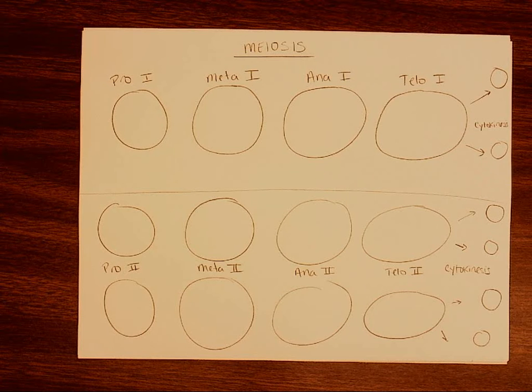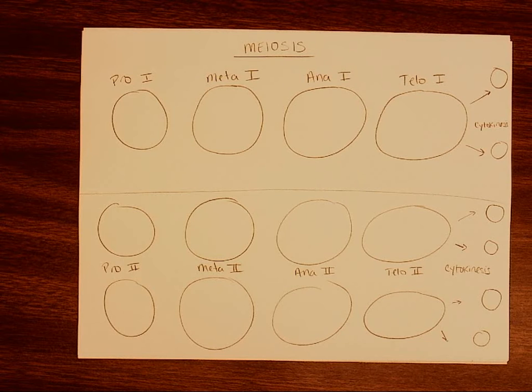Today we're going to look at the steps of meiosis for the formation of our gametes, which are going to be our sperm and our egg cells.